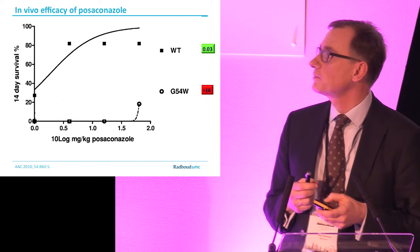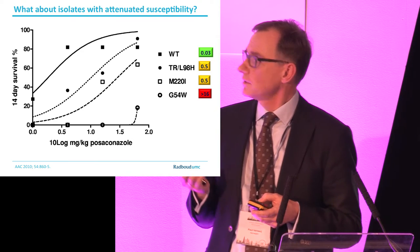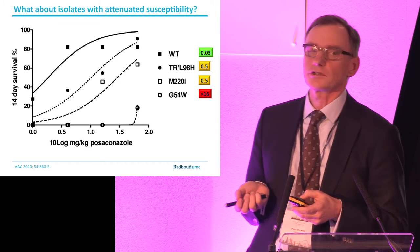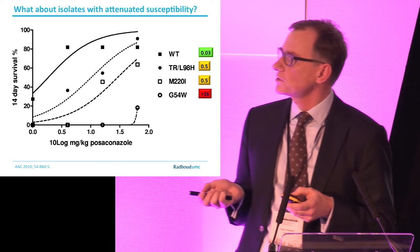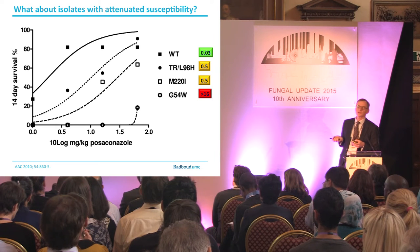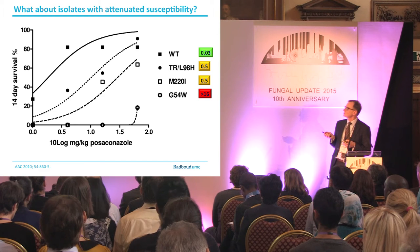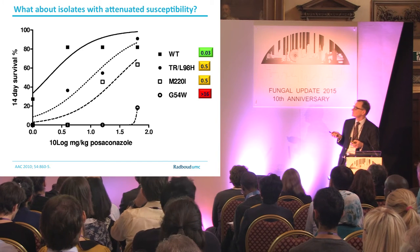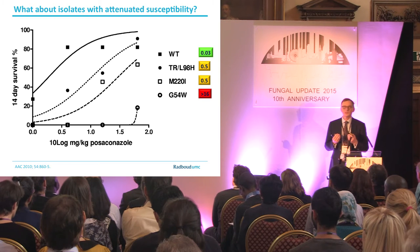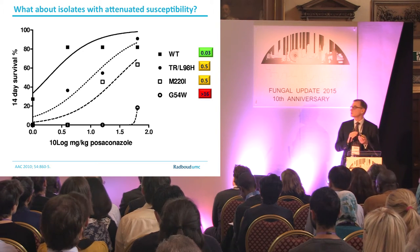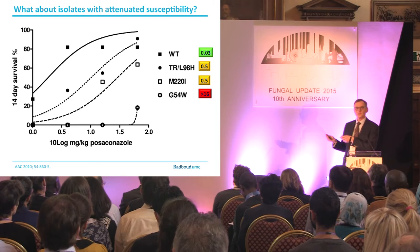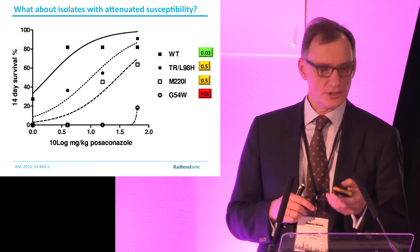The two other isolates with a MIC of 0.5 ended up exactly between the wild type and the one with an MIC greater than 16. This indicates you need higher posaconazole concentrations to achieve similar efficacy to the wild type, and even at the highest concentration you don't achieve the same survival as with the wild type. With azoles, it is very much about the relation between total drug exposure and the MIC — the higher the MIC, the higher the required drug exposure in the patient, and that is limited by toxicity.